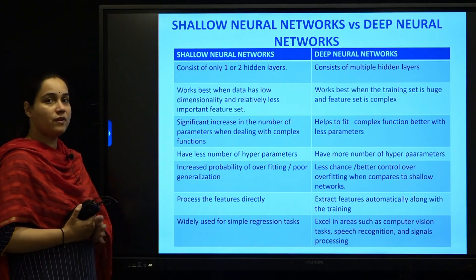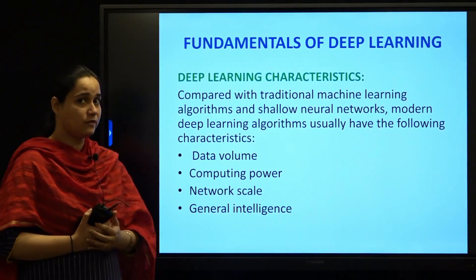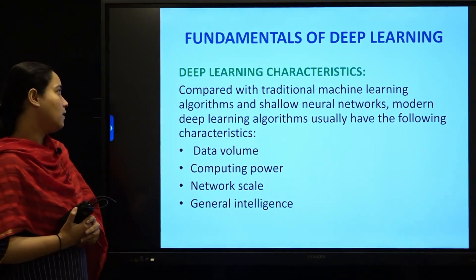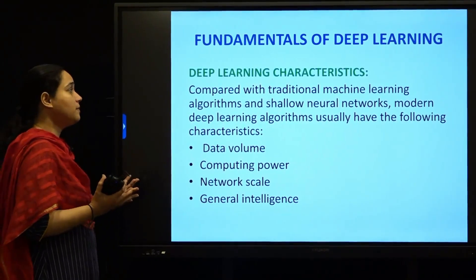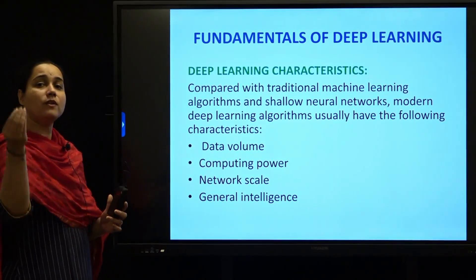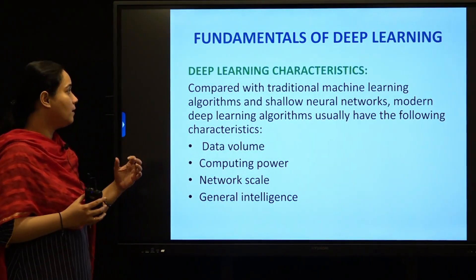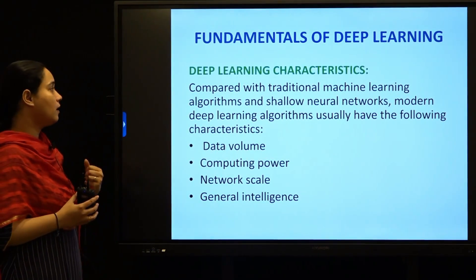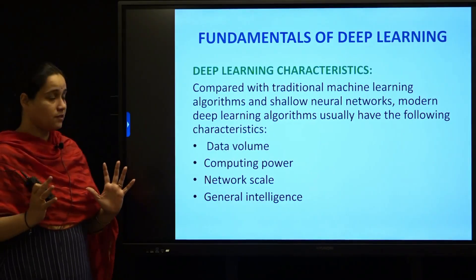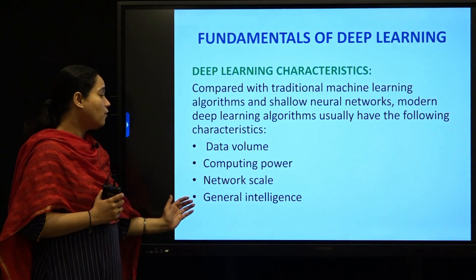That was an overview of the differences between the two. Now moving on to the next topic — Fundamentals of Deep Learning — we are going to talk about the characteristics of deep learning. Here, we compare traditional machine learning algorithms with deep learning algorithms. Modern deep learning algorithms have four major characteristics: data volume, computing power, network scale, and general intelligence.